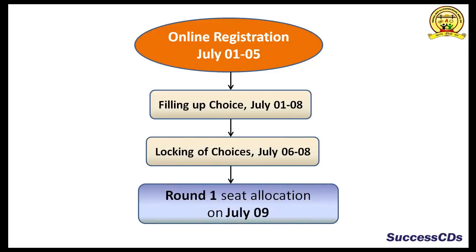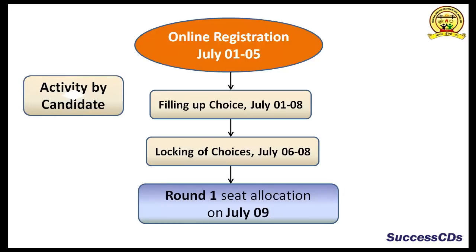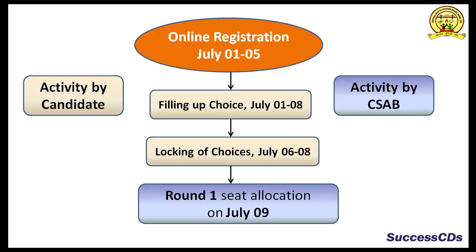The display of seat allocation for the first round will be done on 9th of July. Please note, the brown color box in this chart depicts the activity by the candidates and the blue box depicts the activity by CSAB.